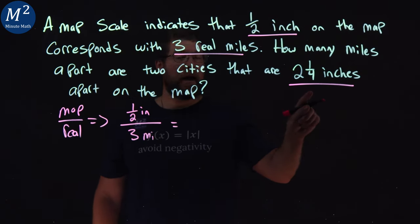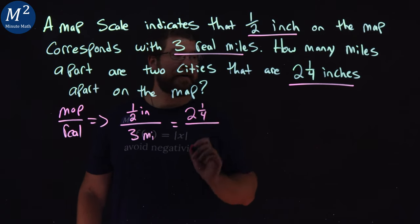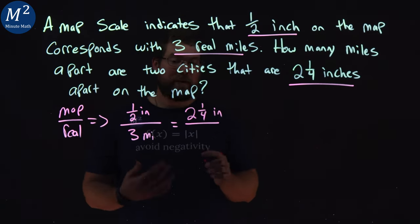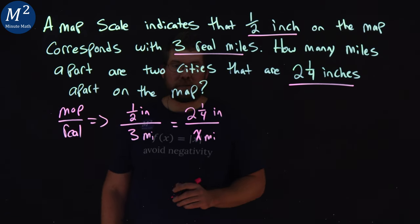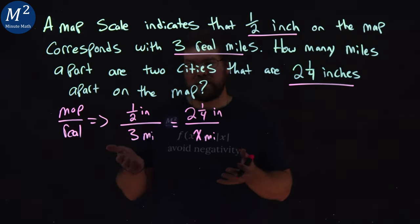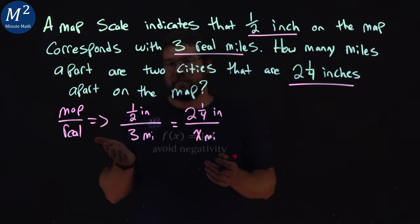So on the map the two cities are two and a quarter inches apart and we want to find how many x miles in real life they are. So now we have a proportion we've set up from our problem. We just have to solve it.